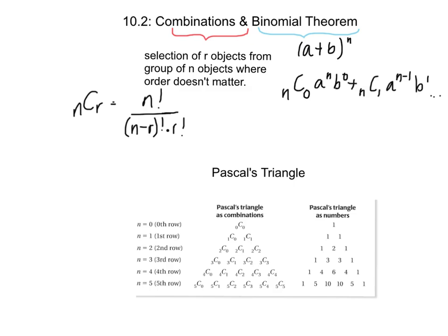The formula for a combination is N factorial divided by the quantity N minus R factorial times R factorial. Moving on to our second part of the section, this is the binomial theorem, which states that A plus B to the N has the form of the combination of N with 0, following this pattern in which the powers of A are decreasing and the powers of B are increasing.